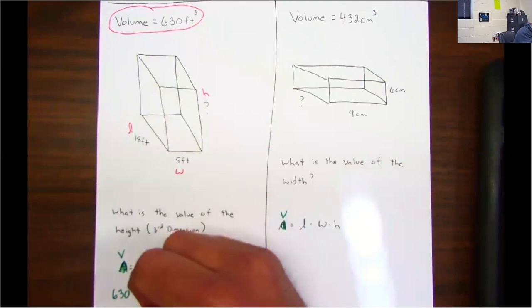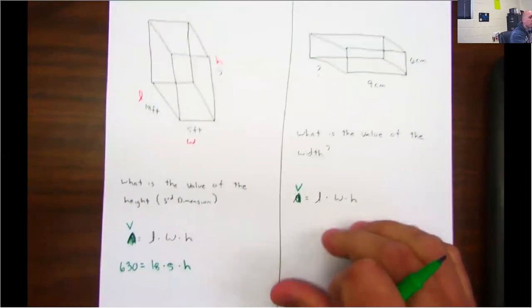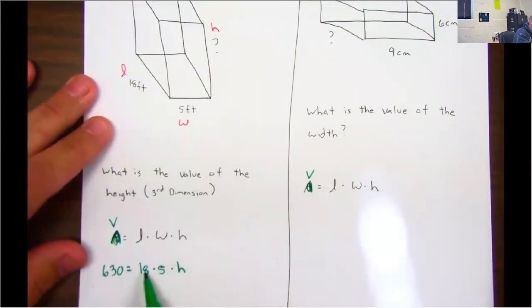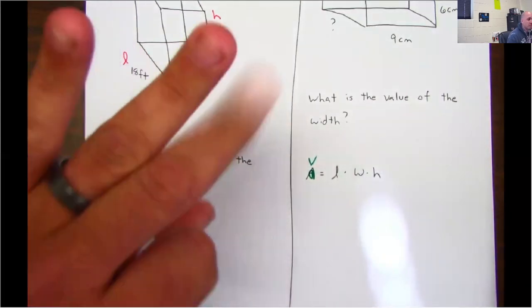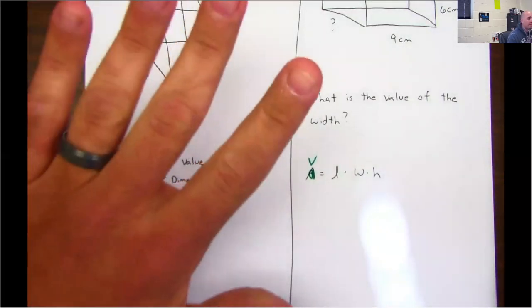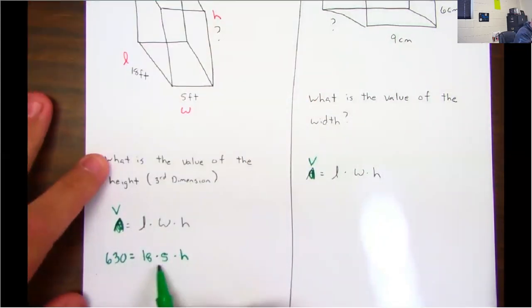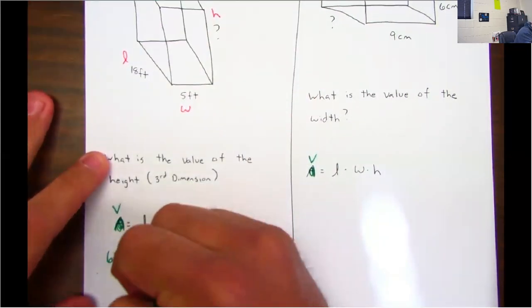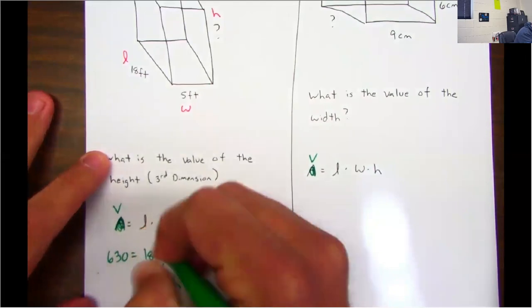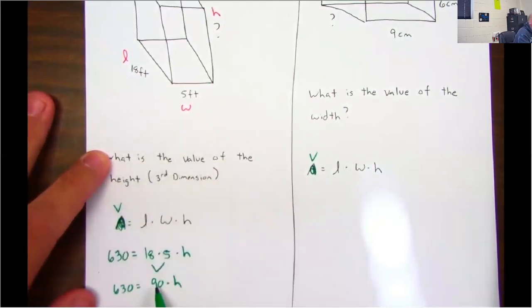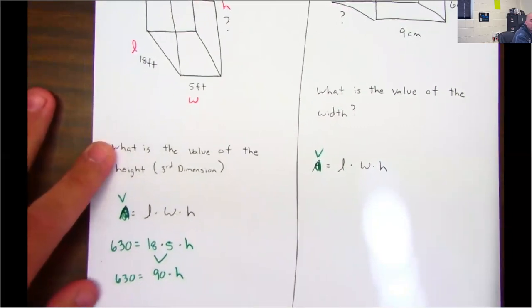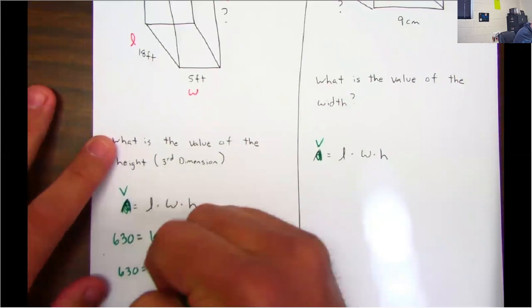My width is 5 times my height. So guys, what we're going to do first: 18 times 5 - 18, 36, 54, 72, 90. So 18 times 5 is 90. So 90 times what number will give me 630? If you don't know that, let's divide.